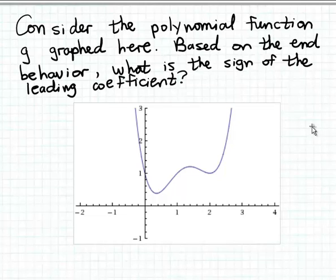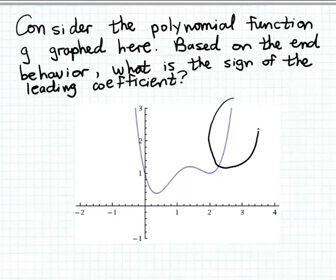So, if we look at the end behavior of this polynomial function, we can see that this graph rises on the far right. By the far right, I mean to the right of all the turning points on the graph. And the graph also rises on the far left, and again, by far left, I mean to the left of all of the turning points on the graph of the polynomial function.